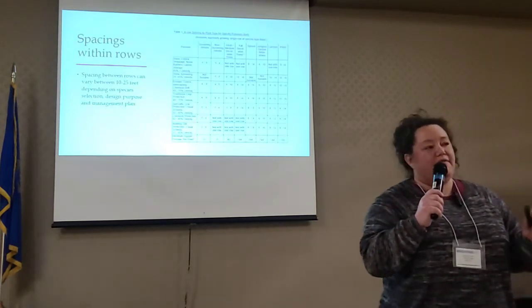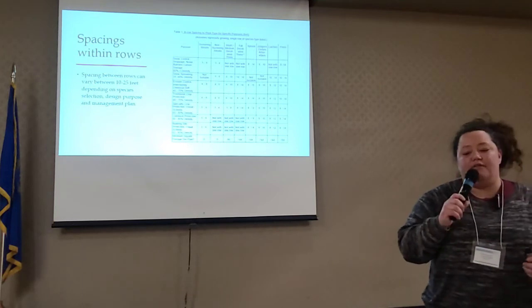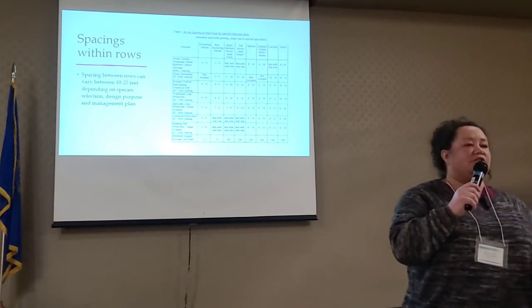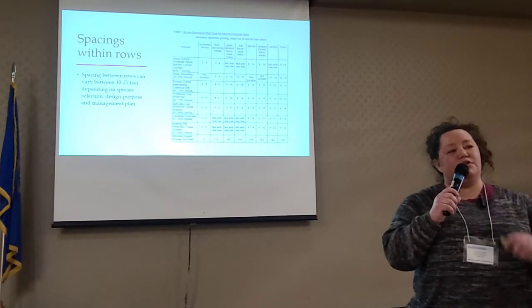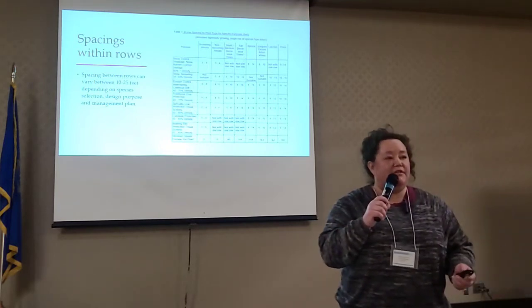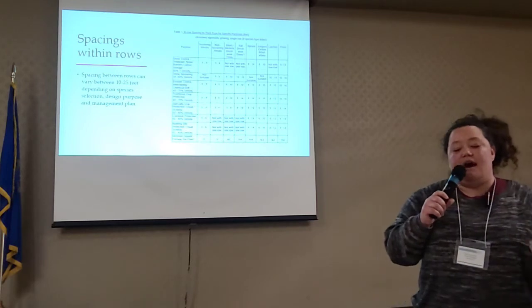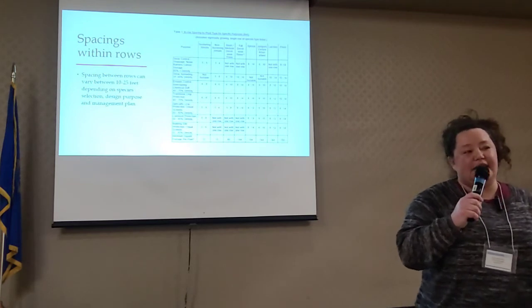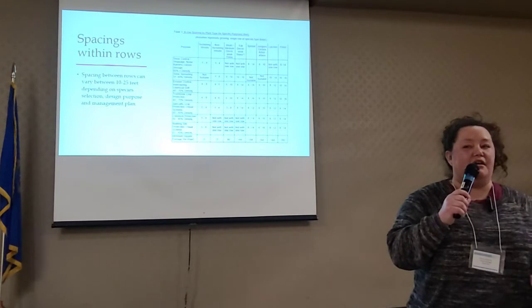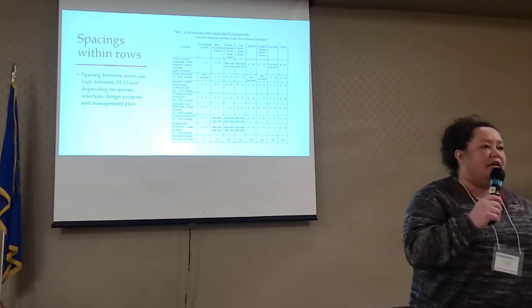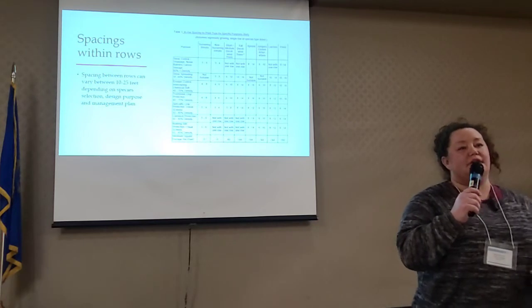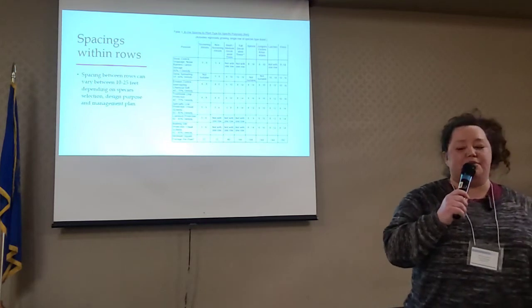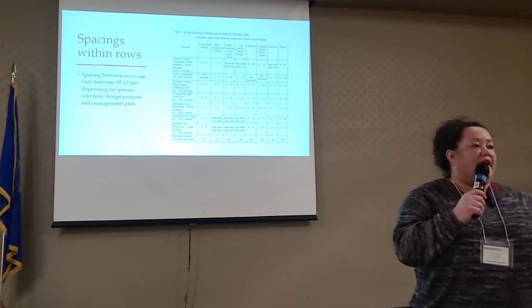Spacings within rows can vary between species. If you're looking for shrubs — suckering shrubs — anywhere between three and six feet. Larger deciduous trees, usually around 10 feet. Really tall deciduous trees, I would say a minimum of 14 feet — you can go upwards of 20. Conifers, except for junipers and cedars, I stick to 12 feet. Junipers and cedars, I stick to 10. This will vary depending on what plan you're doing, the purpose of your plan, and what your producer wants. Sometimes they want larger spacing, sometimes they want closer spacings — you have to work that out with your producer to see what works best for them and for the plan itself.